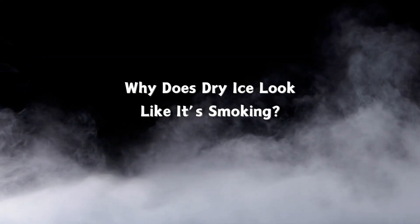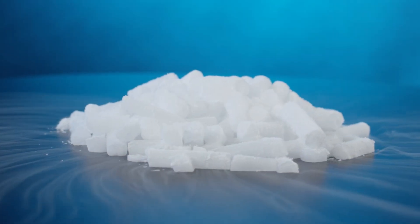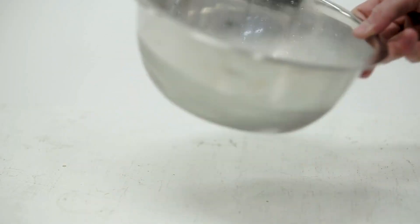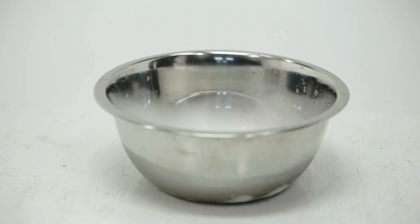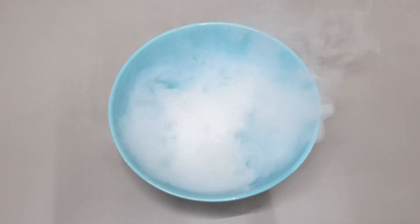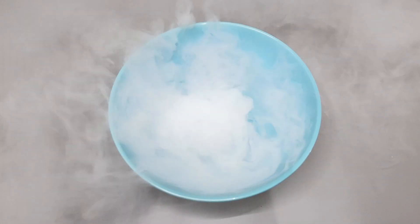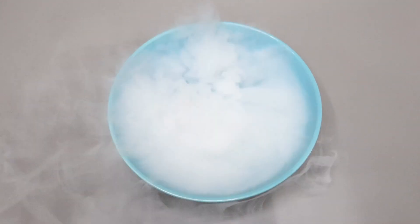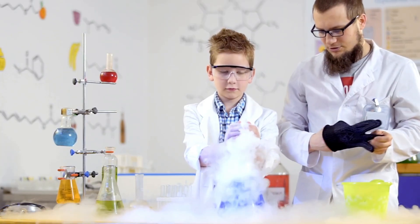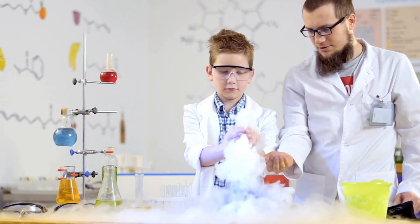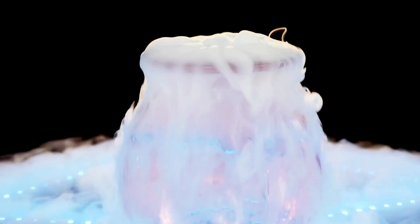Why does dry ice look like it's smoking? Dry ice is the solid form of carbon dioxide. Unlike regular ice, which is frozen water, dry ice doesn't melt — it sublimates, meaning it goes straight from a solid to a gas. When you drop dry ice in water, the warm water rapidly heats the dry ice, causing it to sublimate faster. Carbon dioxide gas forms, but it's invisible to the naked eye. However, this gas is very cold and causes water vapor in the air to condense. What you see as smoke is actually a cold cloud of condensed water vapor, not the gas itself. This process is similar to how fog or clouds form.